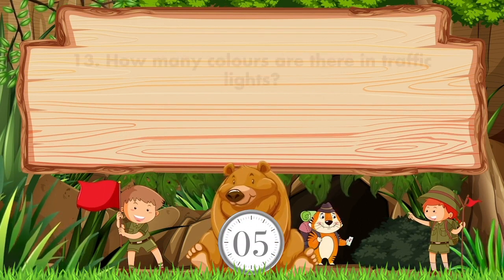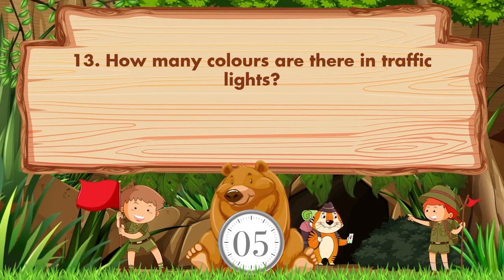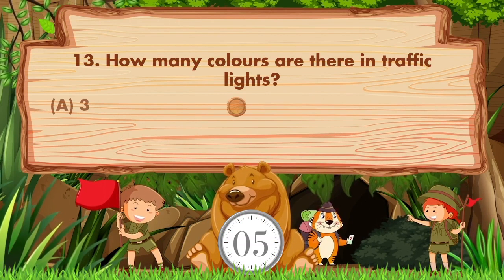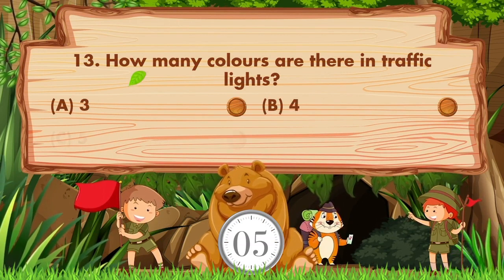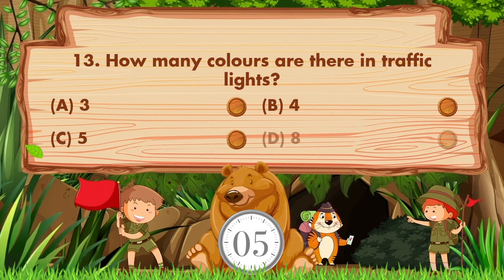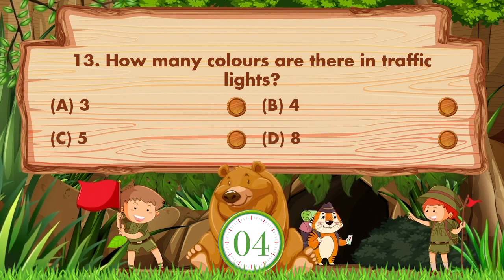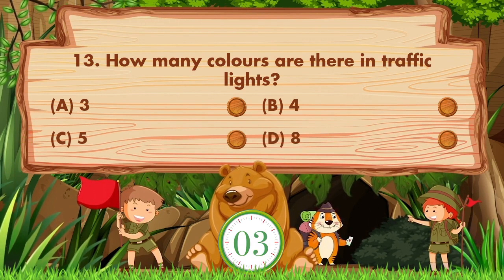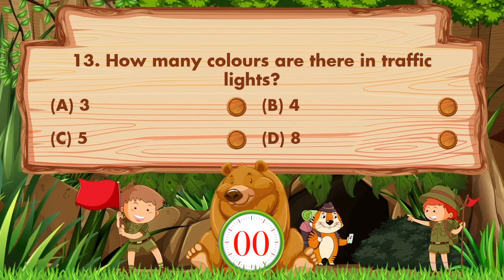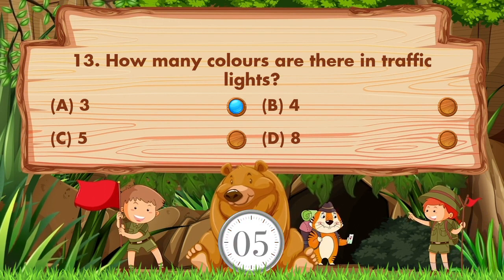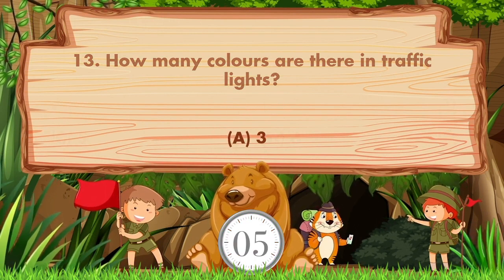How many colors are there in traffic lights? Option A 3, B 4, C 5, D 8. Answer is option A, 3.